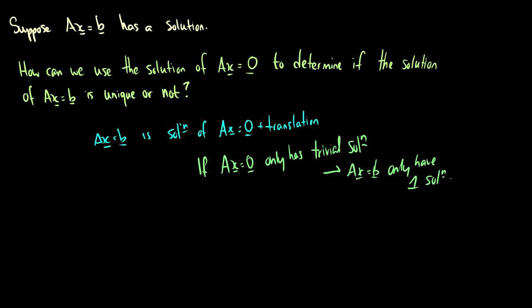But if ax equals zero has more than one solution, then of course we have that x is equal to some constant times a vector, and then plus the translation. So clearly, if there's more than one solution in this TV, then there has to be more than one solution for TV plus the translation.